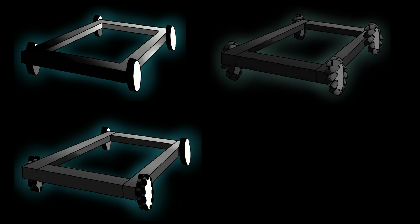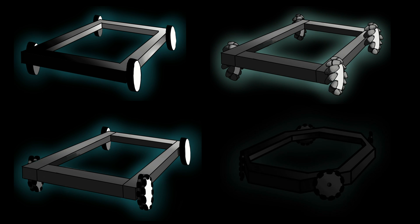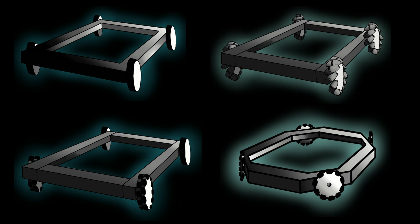CHAD works with four different types of chassis: the Traction Chassis, Partial Omni, Mecanum, and Holonomic Chassis. The website will change based on the chassis you choose to match the capabilities of that chassis.